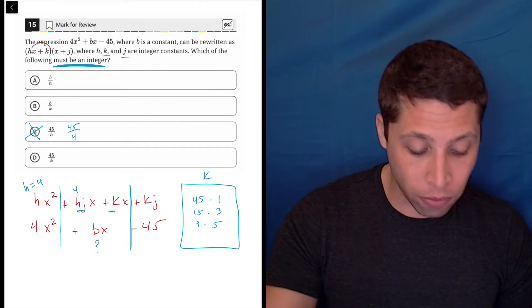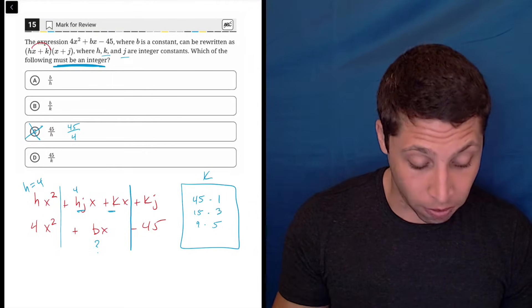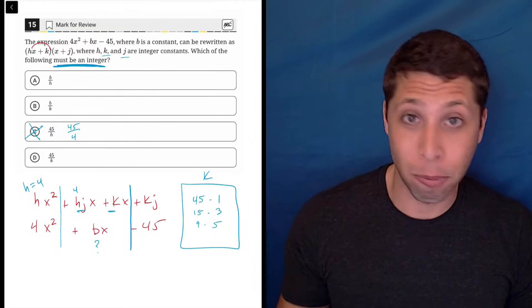So just think about it now: 45 divided by 1, that would be an integer, that would be 45. 45 divided by 45, that would be an integer, that would be 1.